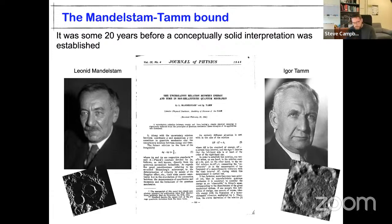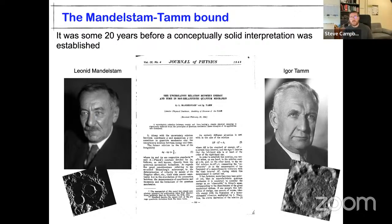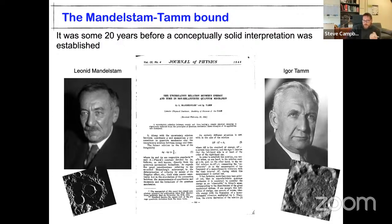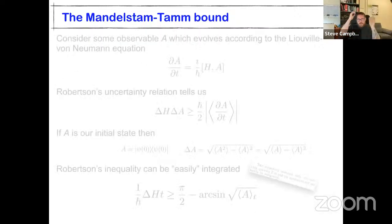Mandelstam and Tamm — two Russian physicists — were the ones who first revisited the energy-time uncertainty relation and gave it a proper physical foundation. Interestingly, both have moon craters named after them. Their great insight was showing that the energy-time uncertainty relation can be understood in terms of the fundamental non-commutativity — the same tools that traditional uncertainty relations use — and they gave it the proper interpretation.